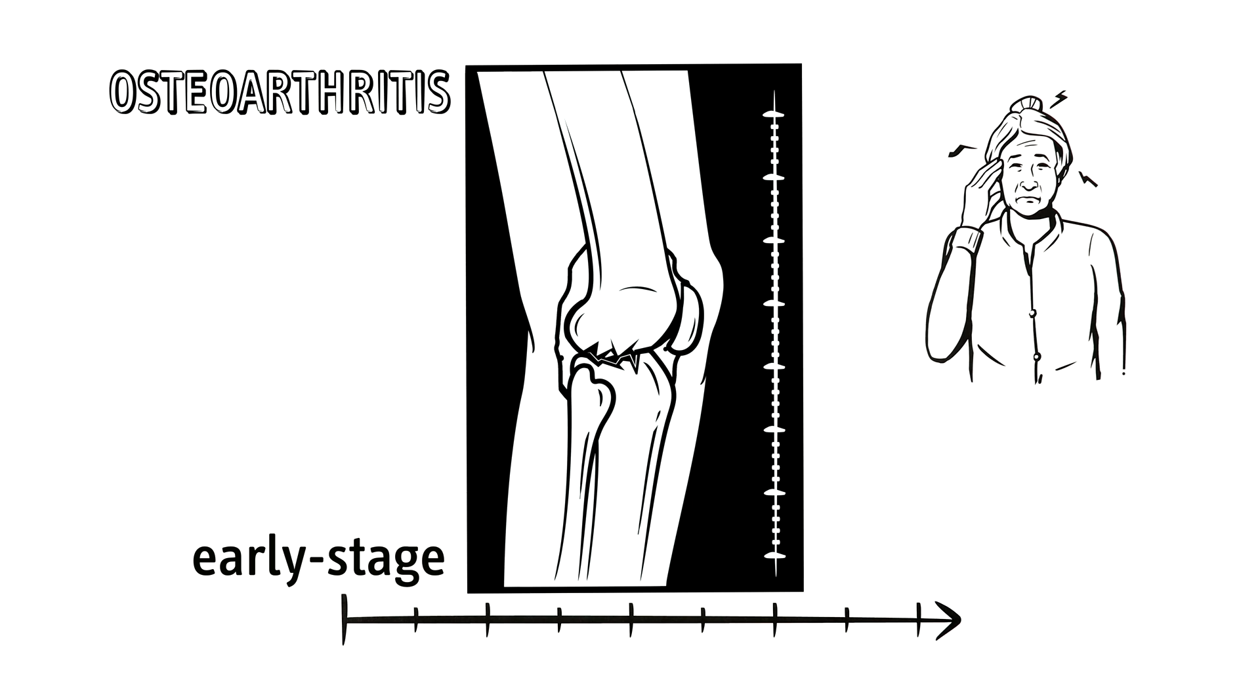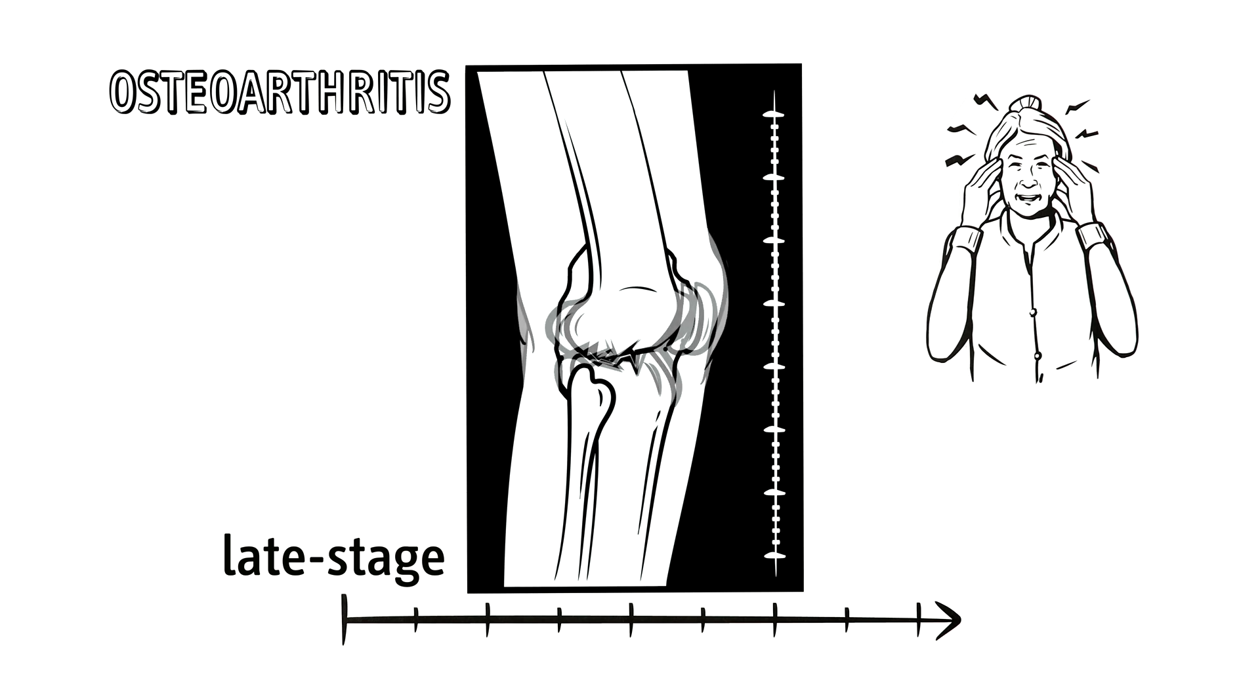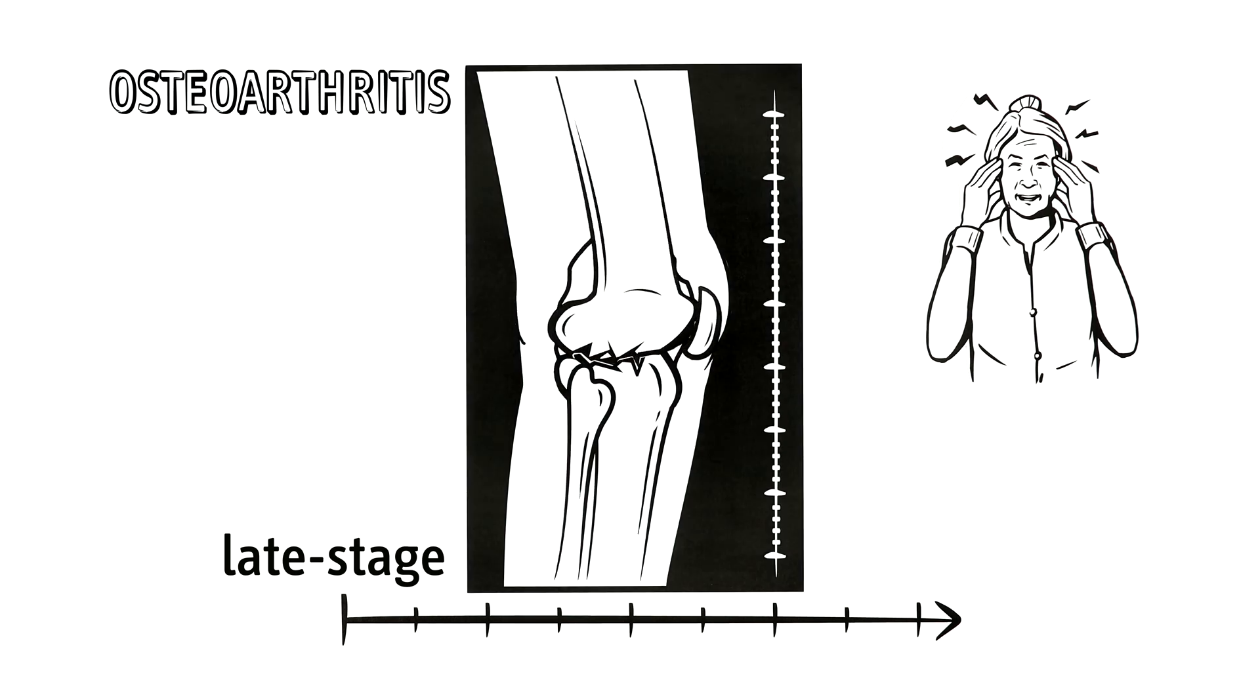This is late stage osteoarthritis. The joint gets wider and the ends of the bones can rub together, which results in limitations in movement and even more pain.